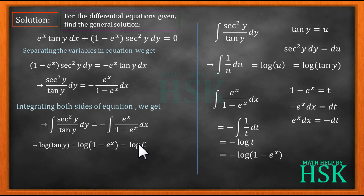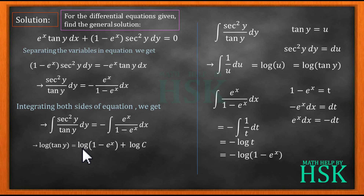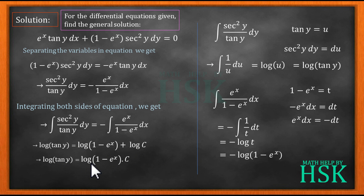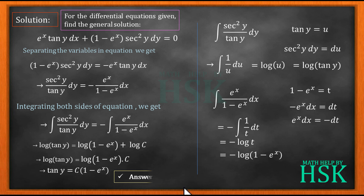Placing both results together with an integration constant log(c) on the right-hand side, the two minus signs cancel, giving: log|tan(y)| + log|1 - e^x| = log(c). Applying the formula log(m) + log(n) = log(mn), we get log|tan(y)| = log|c(1 - e^x)|, which simplifies to tan(y) = c(1 - e^x). This is the required general solution.